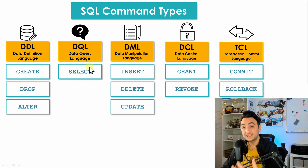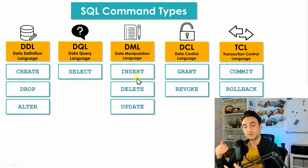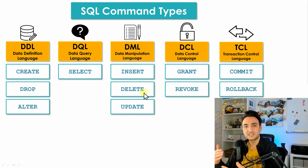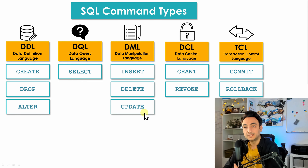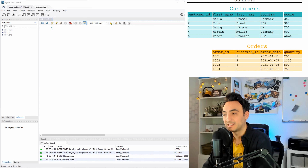For that, we have a new set of commands in the SQL category called DML — Data Manipulation Language. Inside it we have three main commands: INSERT, which we use if we want to insert new data into our tables; DELETE, if we have existing rows we want to remove from the database; and UPDATE, if we want to change the content of existing rows in our tables.